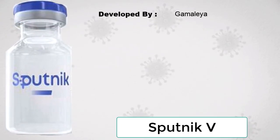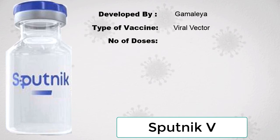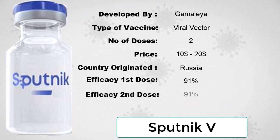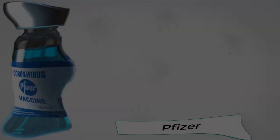The third vaccine is Sputnik V, which is developed by Gamaleya. It is again a viral vector type of vaccine and the number of doses is 2. The price varies depending on the country, ranging from $10 to $20. The country of origin is Russia, and its efficiency of the first and second dose is near about 91%, which is very high.